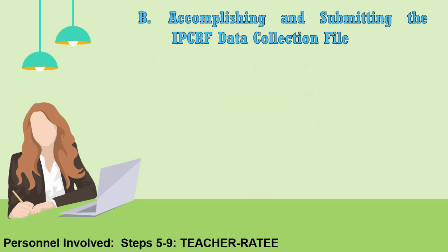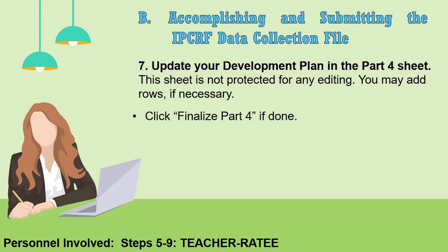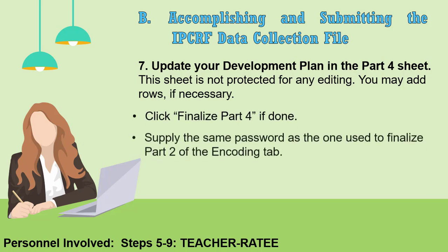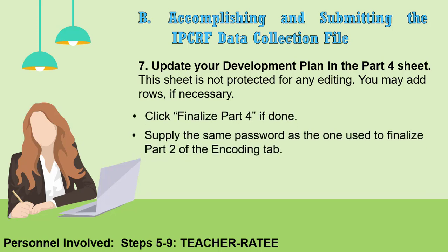Step 7: Update your development plan in the Part 4 sheet. This sheet is not protected and is open for editing. You may add rows if necessary. Click Finalize Part 4 when done. Supply the same password as the one used to finalize Part 2 of the Encoding tab. Click Go, then OK.